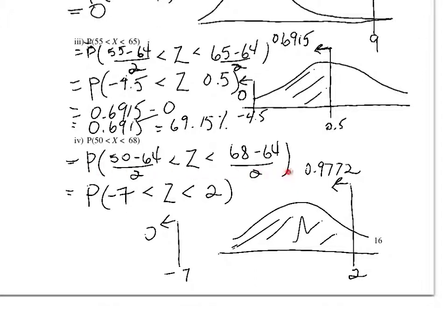The final problem is standardizing, turning X into Z, and these values into negative 7 and 2. The area in between those is found here.